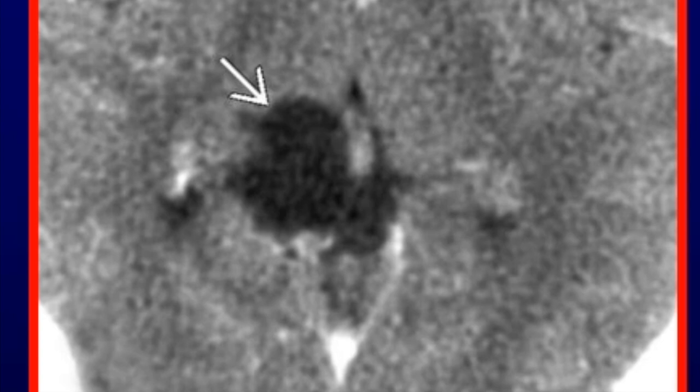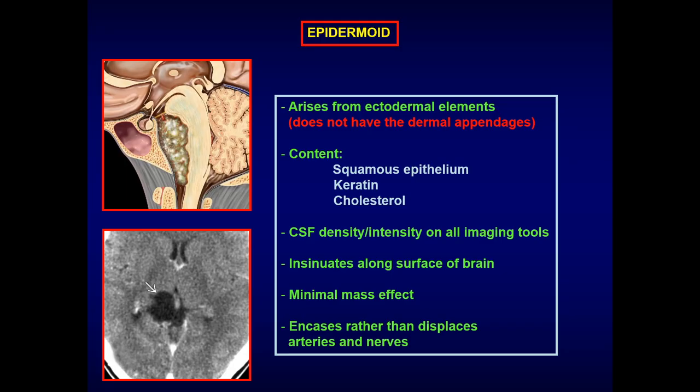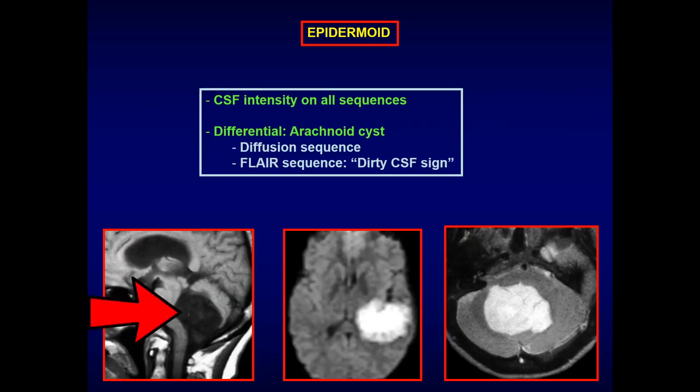Displacement would be seen with a clear cyst, but epidermoid is a lobulated tumor growing along structures, completely encasing the subjacent vessels or nerves. The two classic sequences used to differentiate this from other entities are diffusion sequences and FLAIR sequences. On FLAIR, it has a dirty appearance — called the 'dirty CSF sign.' On T1 and T2, it can be missed as it appears as CSF intensity.